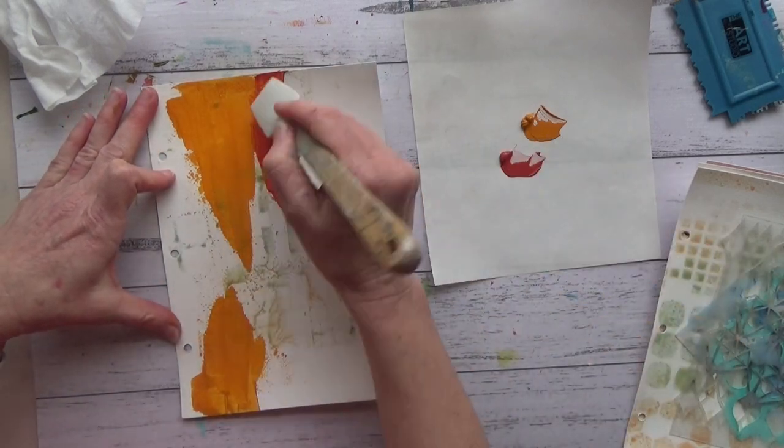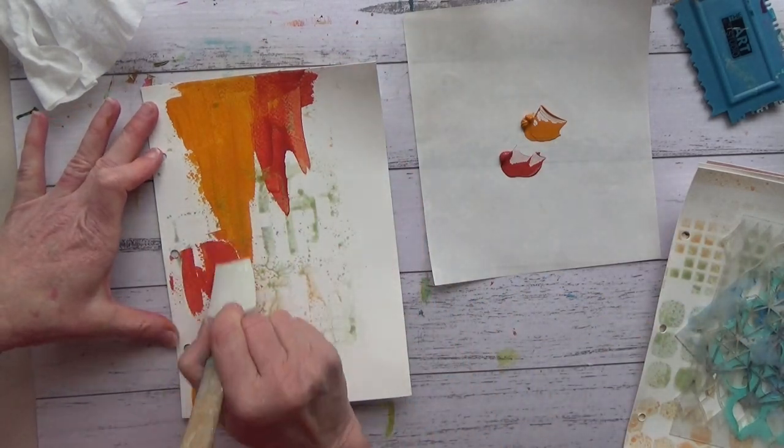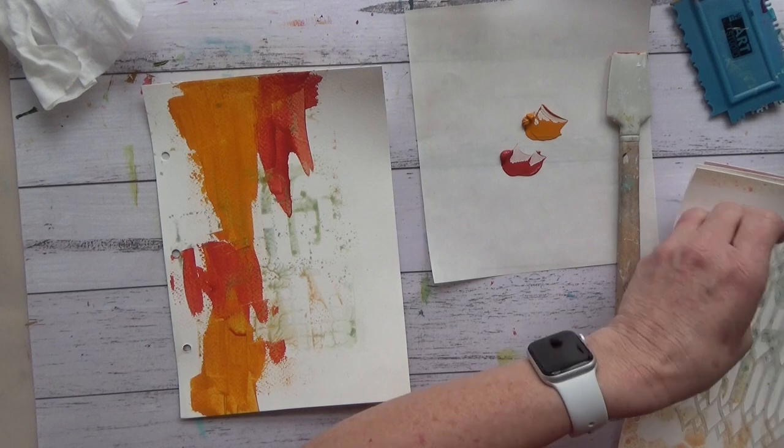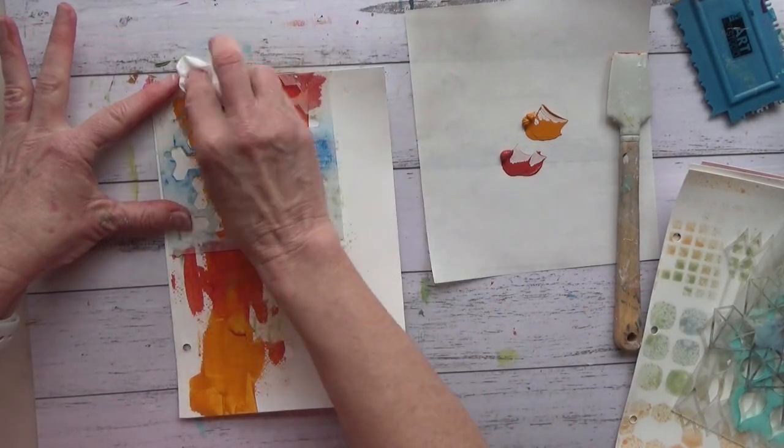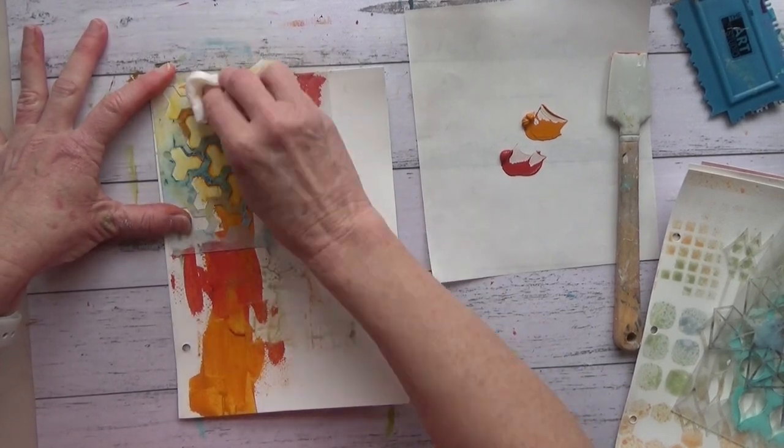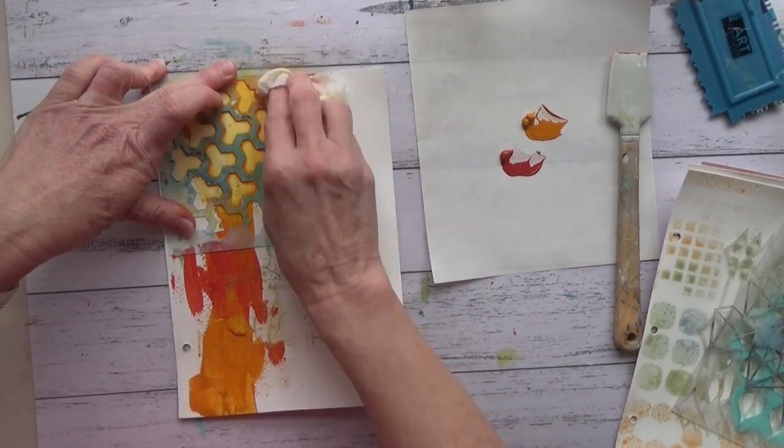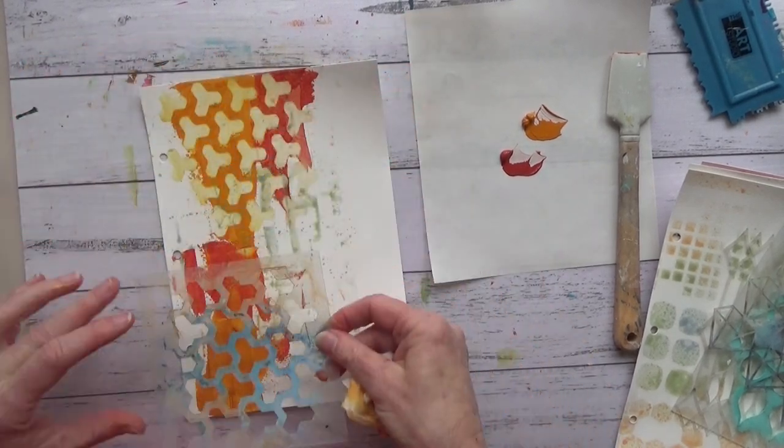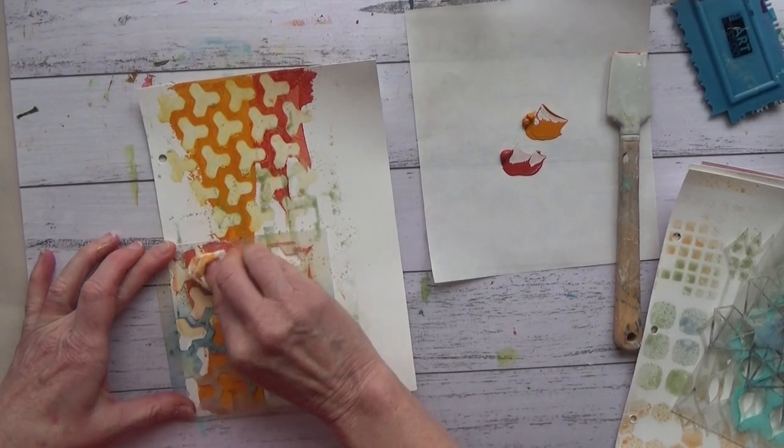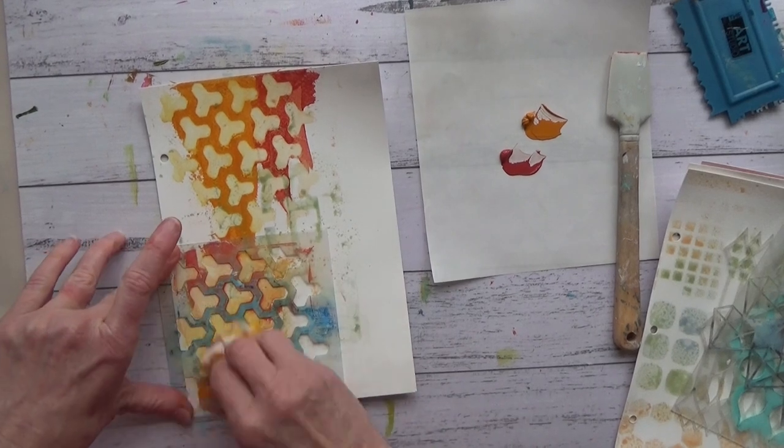And then what I do is add some paint. You can use your finger—I've used a catalyst tool here—and also you could use like a credit card. It doesn't matter how you get the paint on, just add a fairly thin layer.